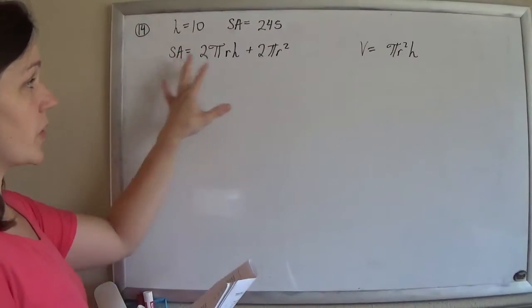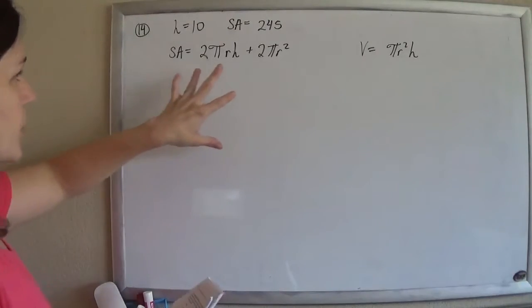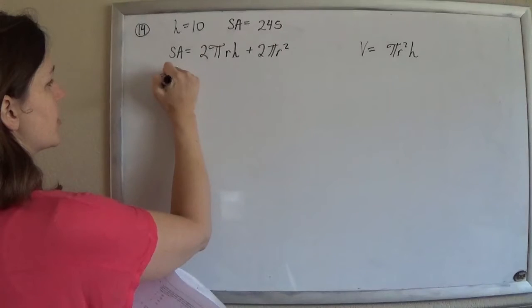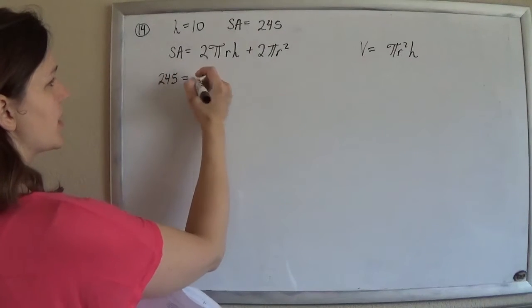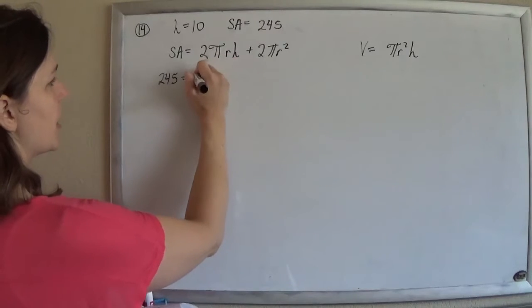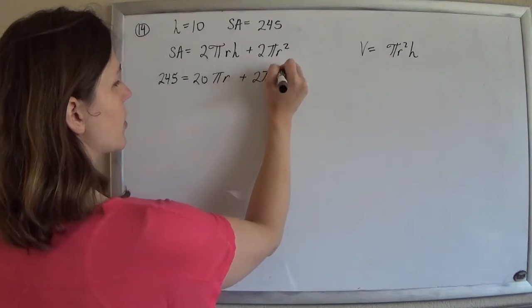We whip out our formulas for surface area and volume of a cylinder and we just play. So they tell us that the surface area is 245, and that's supposed to equal, I know the height is 10, so 2 times 10 will be 20 pi r plus 2 pi r squared.